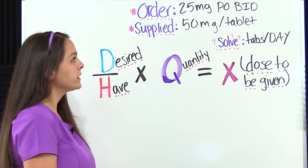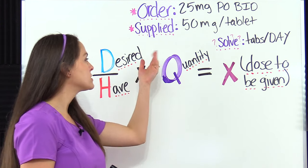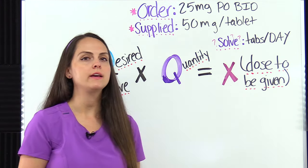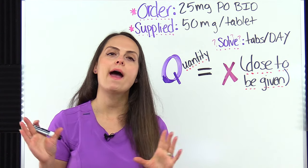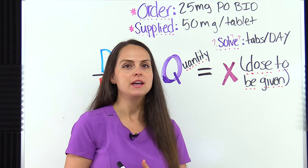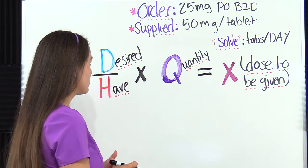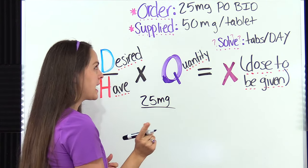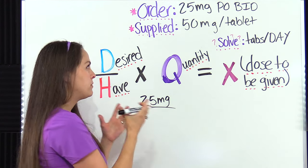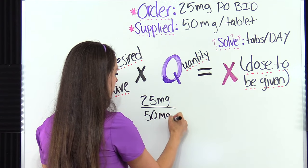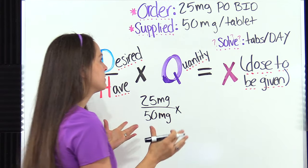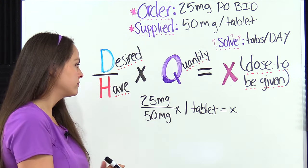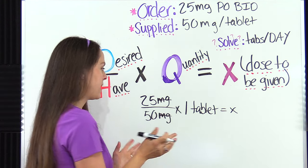This problem says the physician has ordered 25 milligrams by mouth twice a day (BID). We're supplied with 50 milligram tablets, so every tablet has 50 milligrams in it. We need to solve for how many tablets we're going to give per day — notice this asks for the whole day, not per dose. Always pay attention to what they're asking. The desired dose is 25 milligrams, over H: 50 milligrams on hand, times the quantity: one tablet. Milligrams cancels out — we don't need to convert.